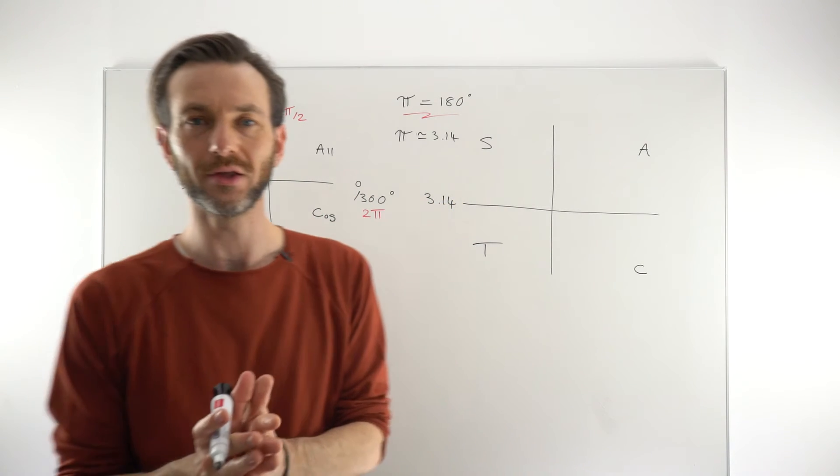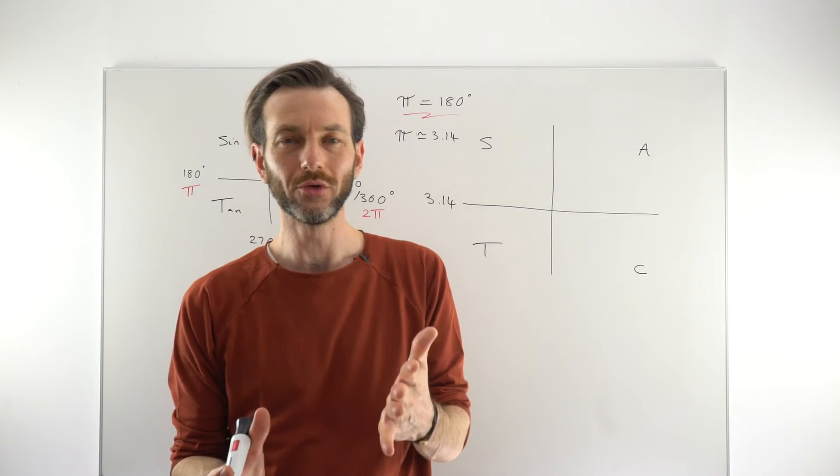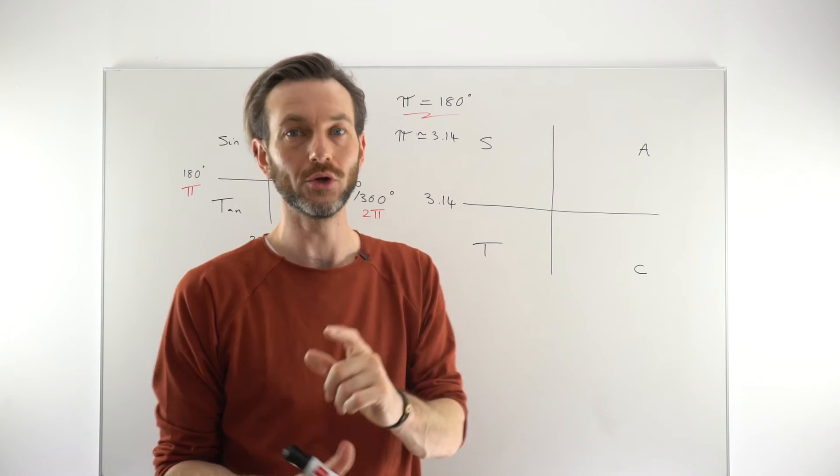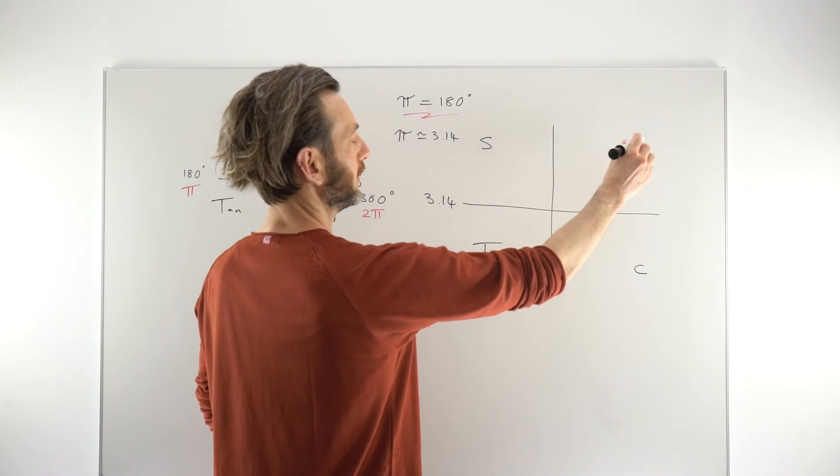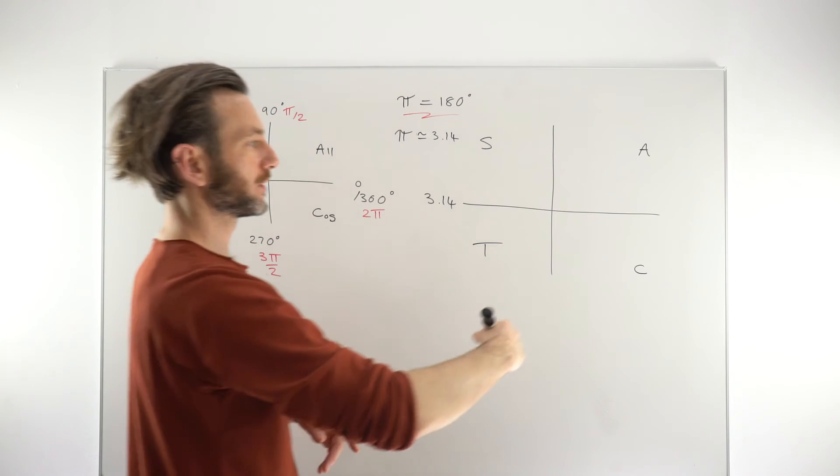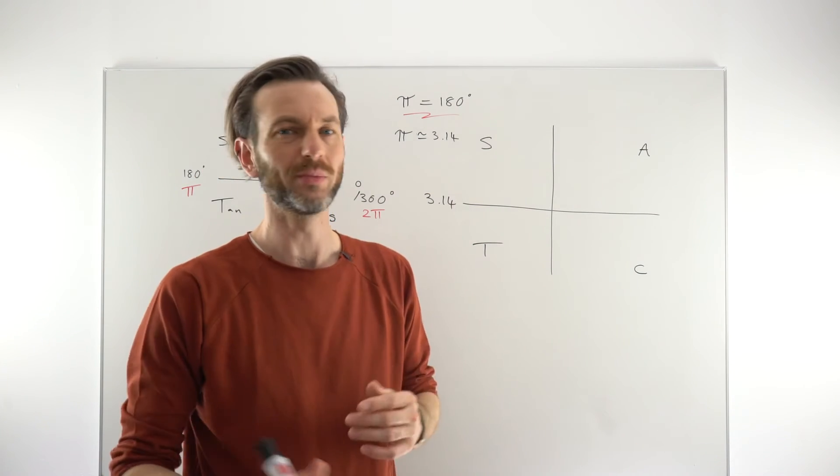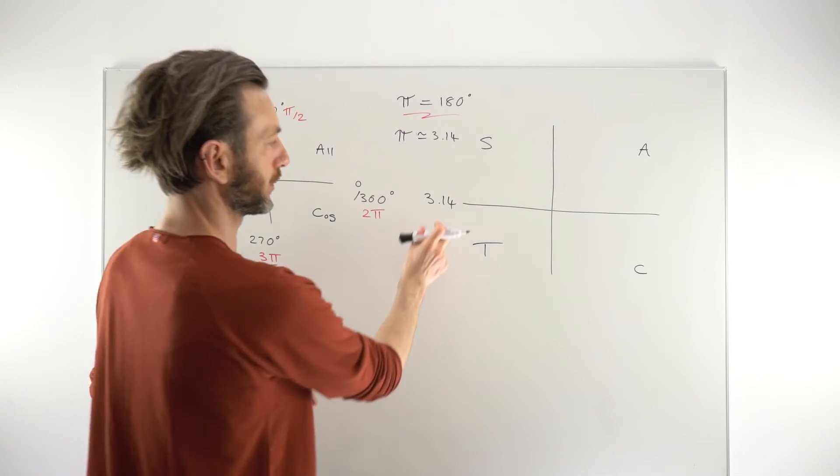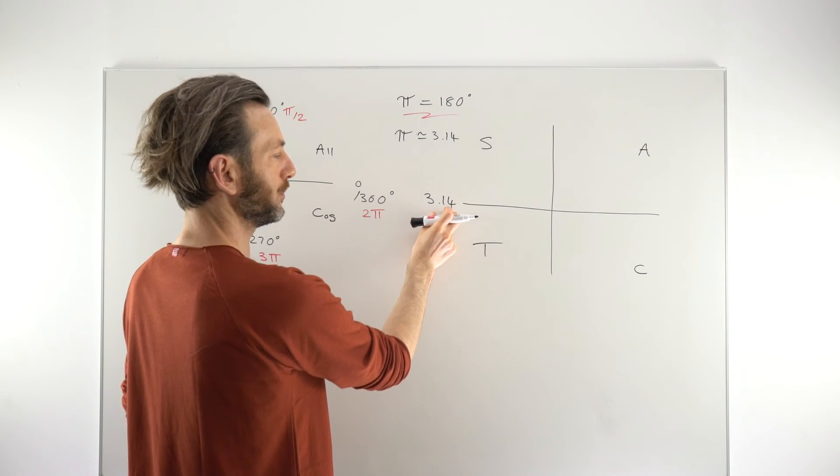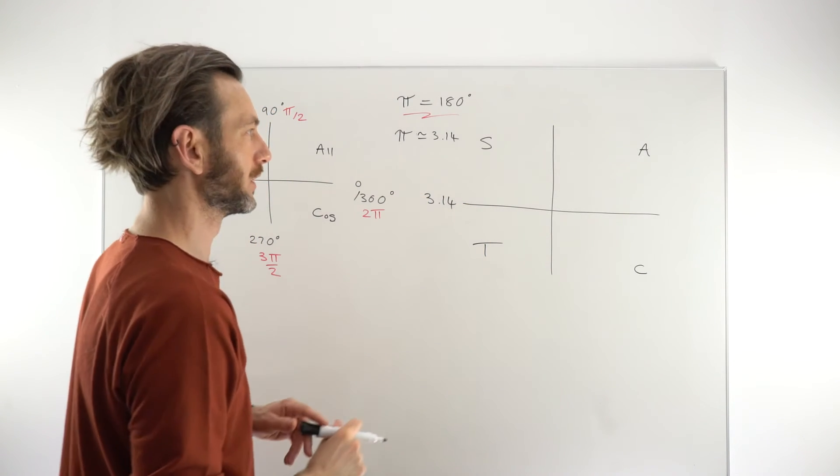Because remember, when you're using the CAST diagram, you're not generally using it in a very precise way. You're using it just to put a check mark in the different quadrants as part of some other process, like solving a trig equation or something like that. So we don't need to be super accurate. Calling that 3.14 radians is definitely good enough.